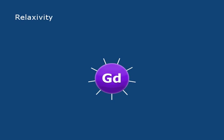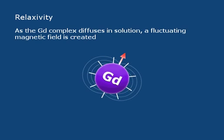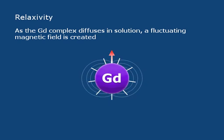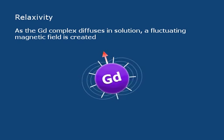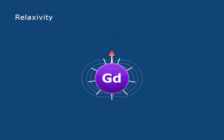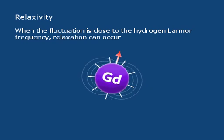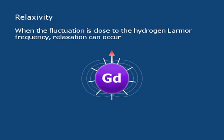So how does that happen? Well, there's a lot of interesting physics going on. The gadolinium, as mentioned, is a very strong local magnet with those seven unpaired electrons. As the gadolinium complex diffuses in solution — as it's just tumbling around — a fluctuating magnetic field is created. And when that fluctuation is close to the hydrogen Larmor frequency, then we can get relaxation to occur. So we can transfer the energy from gadolinium to the water.